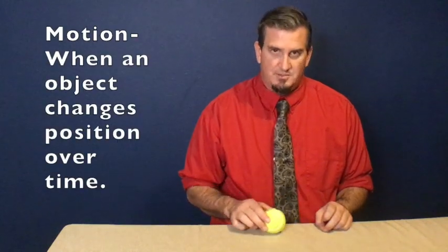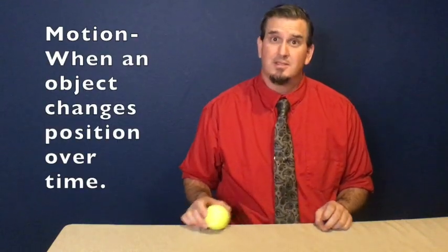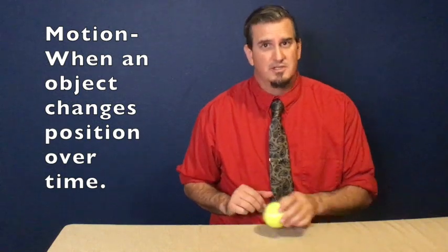In science, we define motion as an object's change in position over time. So if this tennis ball is changing its position over time, we can safely say that it's in motion.